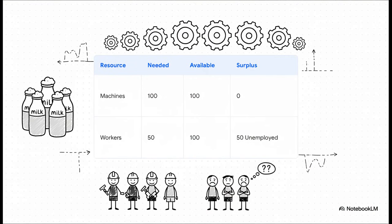Let's break down how we're using our resources here. To make those 25 tons of milk, we need all 100 of our machines. They're all busy. But we only need 50 workers to operate them. That means we have a surplus of 50 workers who are just idle. They're unemployed.